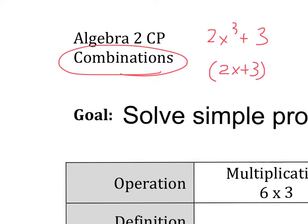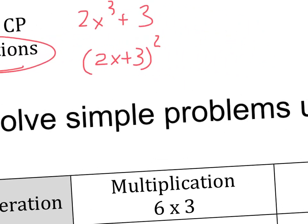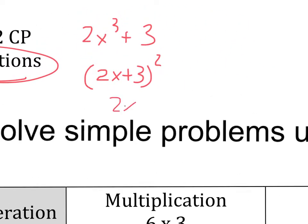If I had 2x plus 3 squared and I wanted to expand it, we say to ourselves, that's not too difficult. I can just say 2x plus 3, 2x plus 3, and I can do FOIL or double distribution.